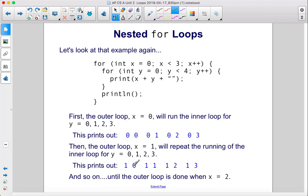So this will print out one zero, one one, one two, and one three, and so on until the outer loop is done when x equals two.